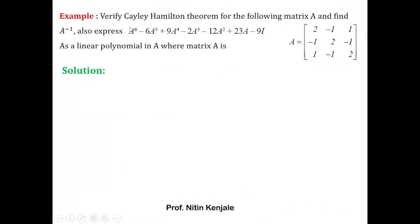The question is: verify the Cayley-Hamilton theorem for the following matrix A and find A inverse. Also express A⁶ − 6A⁵ + 9A⁴ − 2A³ − 12A² + 23A − 9I as a linear polynomial in A, where matrix A is given. There are three sub-questions: first, verify the Cayley-Hamilton theorem; second, find A inverse using the theorem; and third, express this large matrix polynomial as a linear polynomial in A.